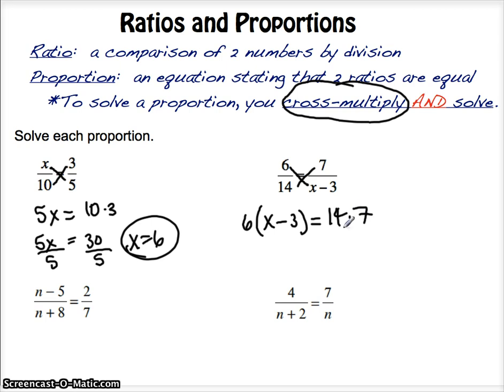Okay? Now, 14 times 7 is 98, equals, distribute here, 6x minus 18. Add the 18.